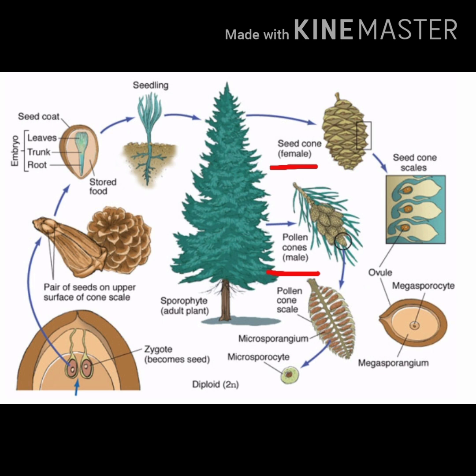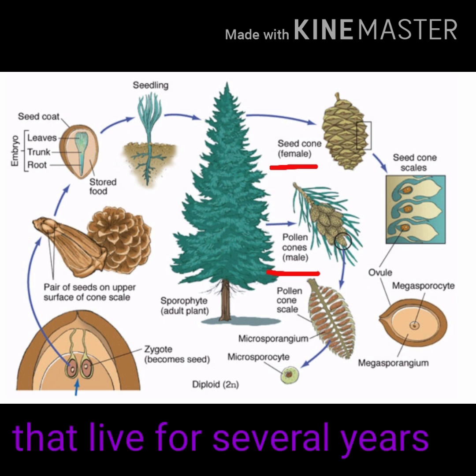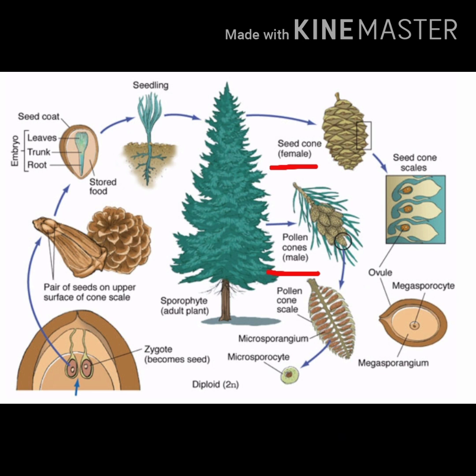Examples of gymnosperms are cycas, Christmas tree, thuja (also called mor pankhi), pinus, and deodar. Gymnosperms are the first division under phanerogams where seeds are not enclosed inside a fruit. They are mostly evergreen, perennial, and woody. Leaves form a crown and they bear male and female sporophylls on the same plant. Seeds do not have a natural covering and they do not form fruits.